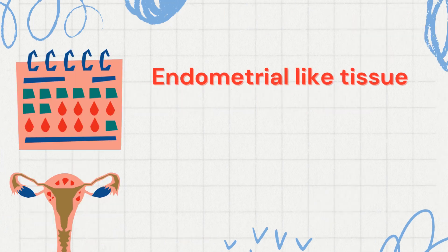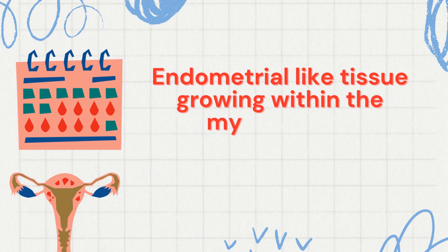Adenomyosis is endometrial-like tissue — that is, the glands and stroma of the endometrium — growing within the myometrium of the uterus.